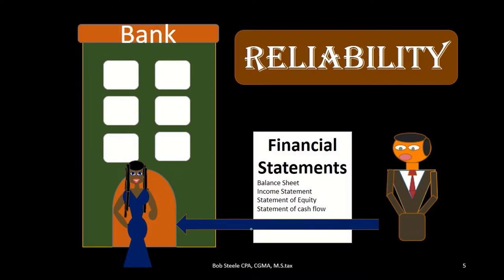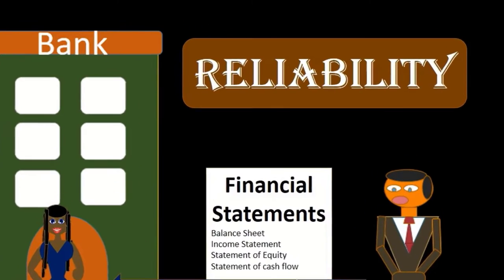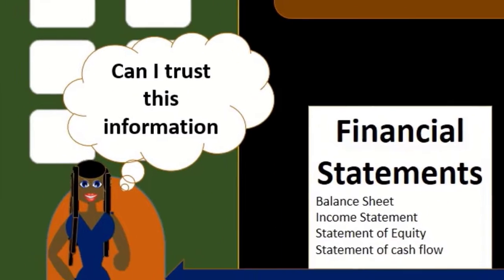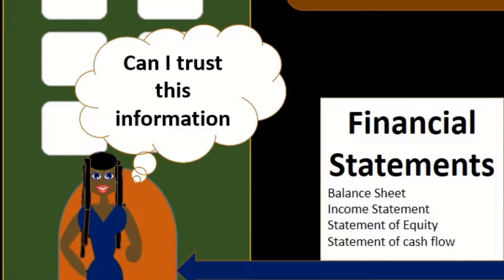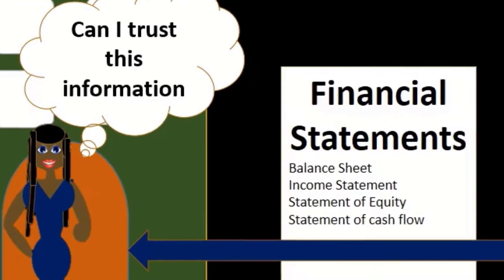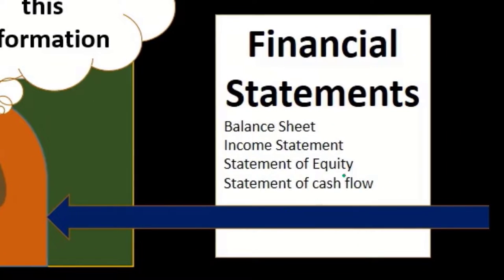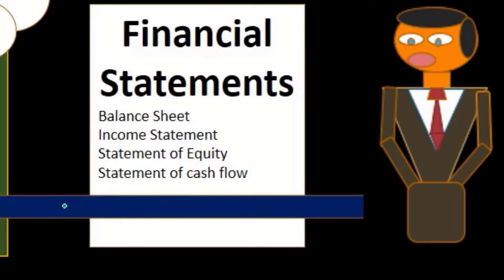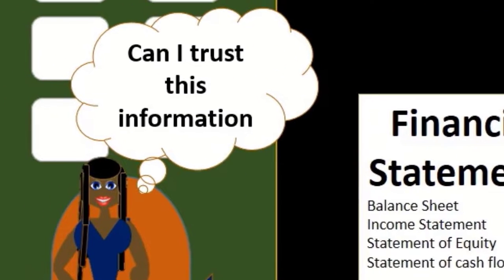Then we've got reliability. We're trying to get a loan and the bank is basically asking: can we trust these financial statements? The idea of giving the financial statements to the bank means the bank is going to be questioning whether or not those numbers — these numbers just on paper — can be trusted.